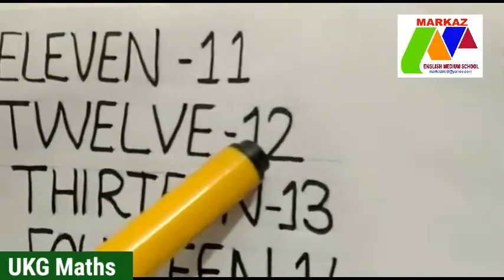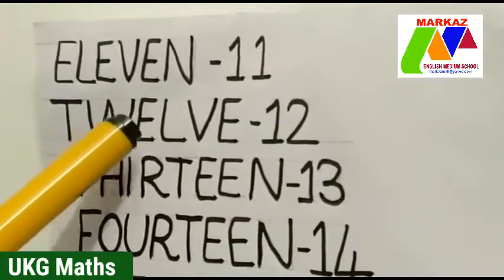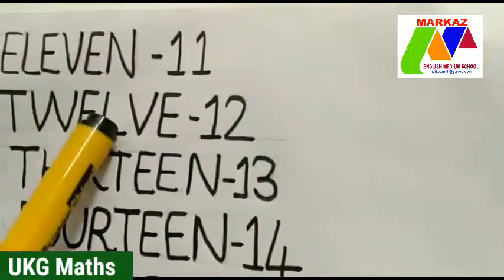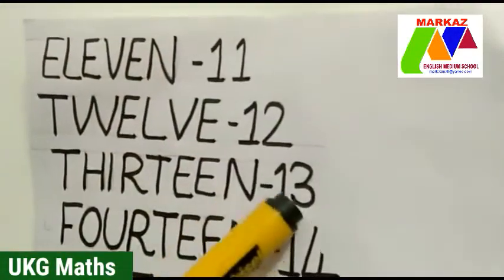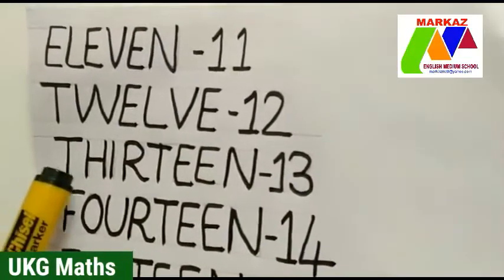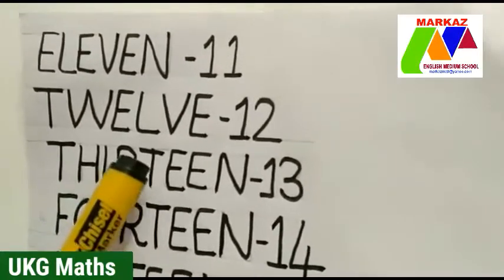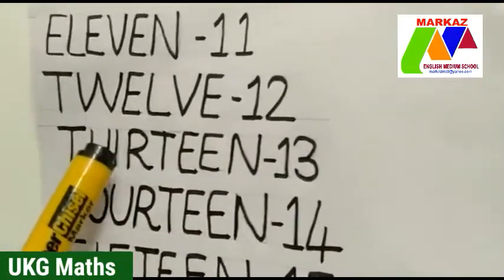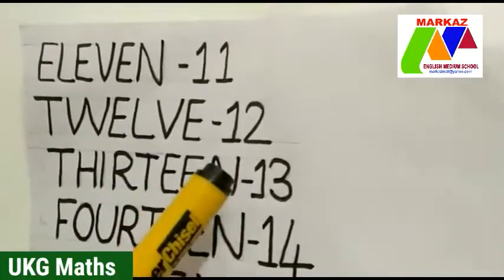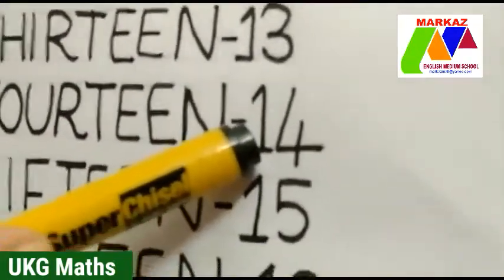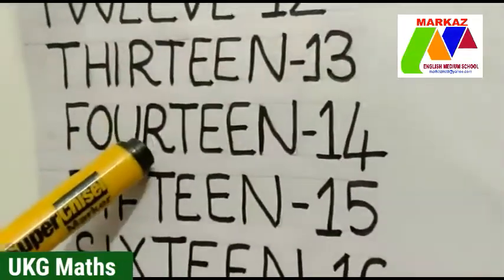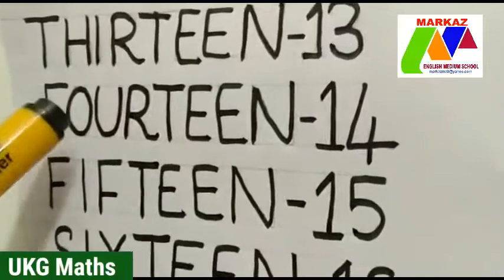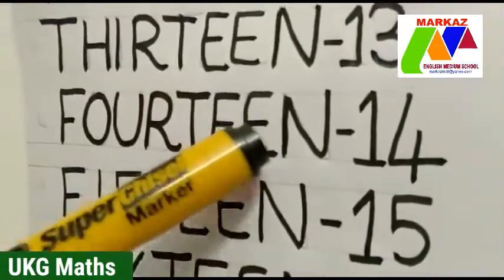Next number 12. What is the spelling of 12? T-W-E-L-V-E, 12. Next number 13. What is the spelling of 13? T-H-I-R-T-E-E-N, 13. Next number 14. F-O-U-R-T-E-E-N, 14.